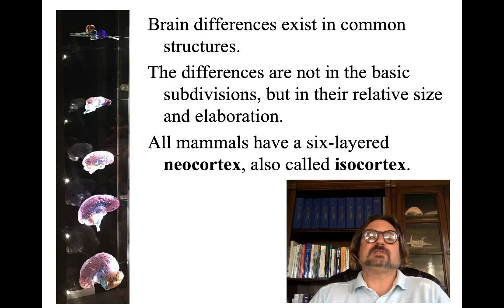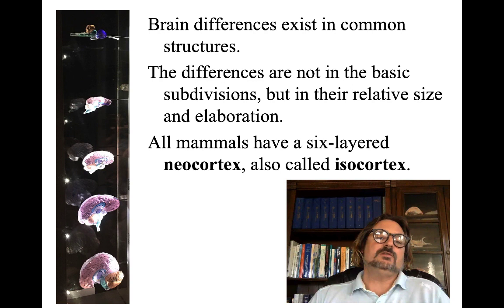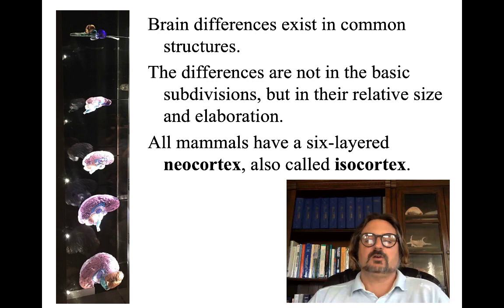Brain structures exist in common across mammals, but differences exist in the relative size of structures, not the basic subdivisions. Different mammals have different enlarged areas of their brain. All mammals have a six-layered neocortex called the isocortex — the highest level — as well as limbic cortex.